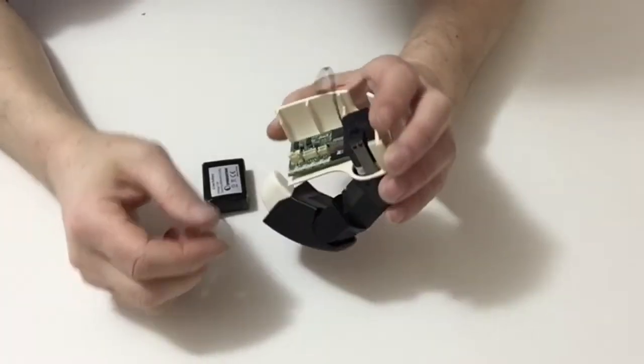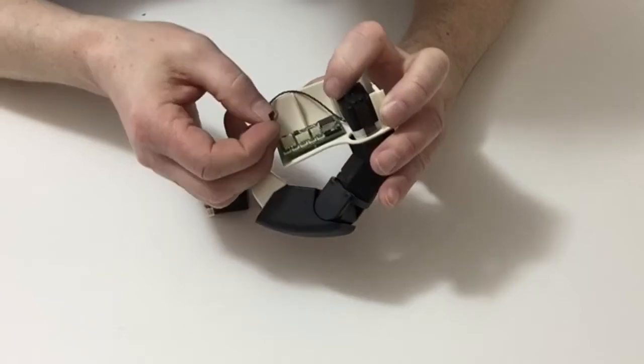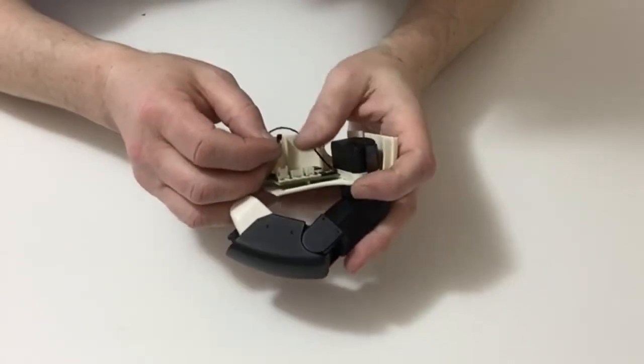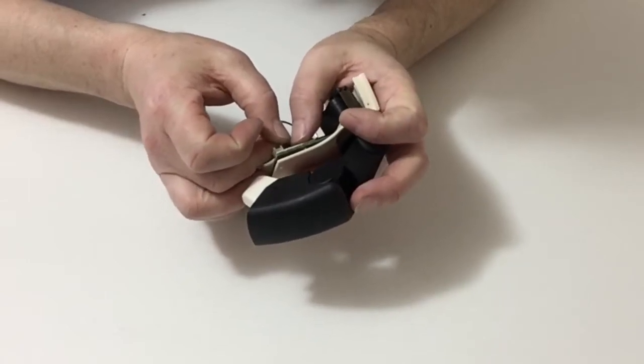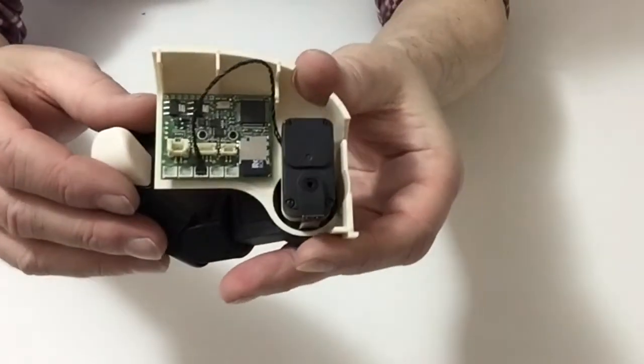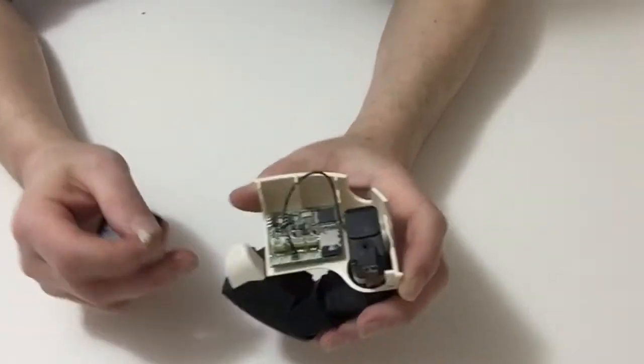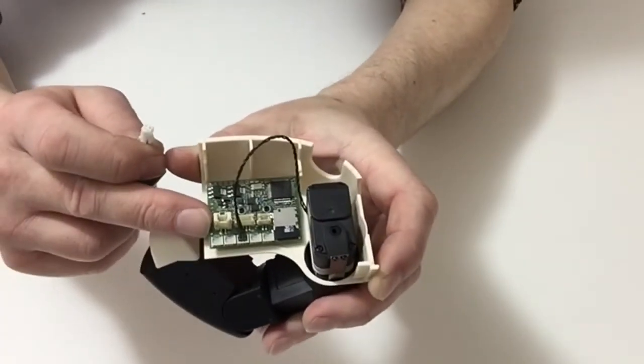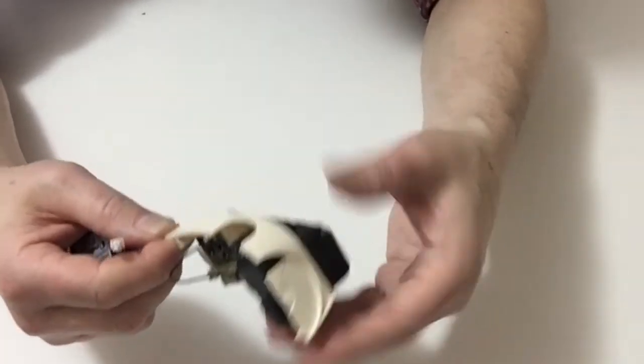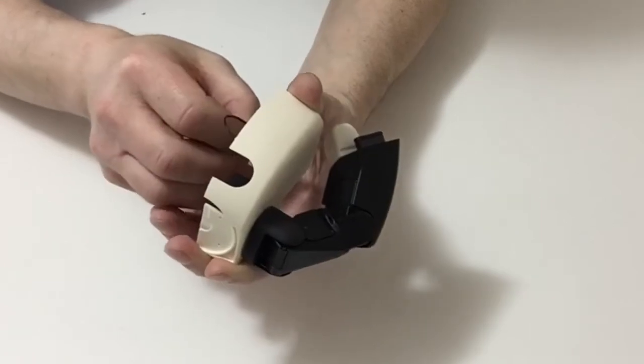Once you've done that take the connector from the servo and then connect that into channel 5B which is the centre channel of the five connectors like so and then get your battery and you're going to connect your battery to this connection here and once you do that Robbie's arm will start to move testing all the servos in certain positions.